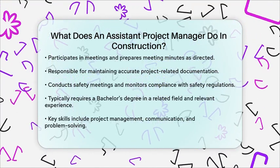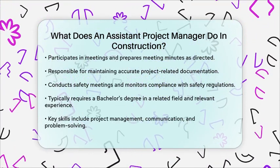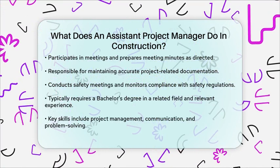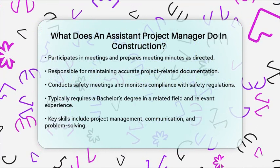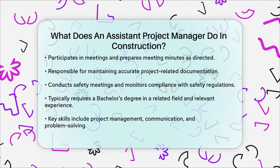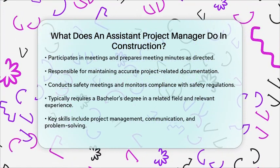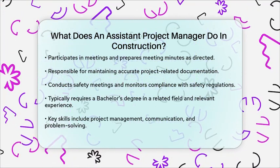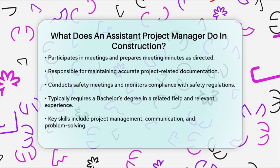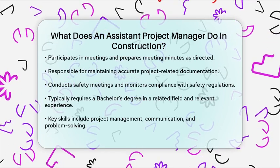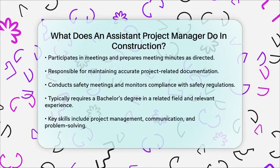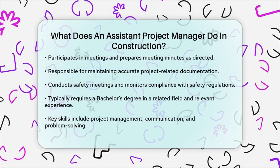In summary, an assistant project manager in construction is involved in a wide range of activities, from planning and coordination, to budgeting, quality control, and communication, all aimed at ensuring the successful completion of construction projects.